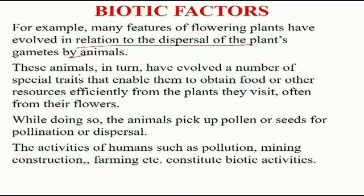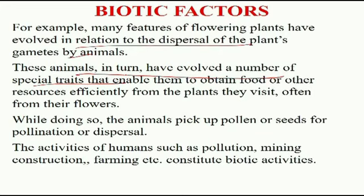These animals have evolved a number of special traits that will allow them to benefit from the resources available for one another in a very efficient manner. And when we discuss diversity, we mentioned that flowering plants are the most developed because of the ability to rely on external agents for pollination and for dispersal. These are the interactions we are talking about, and while doing that, animals pick up seeds and dispersal is enhanced.